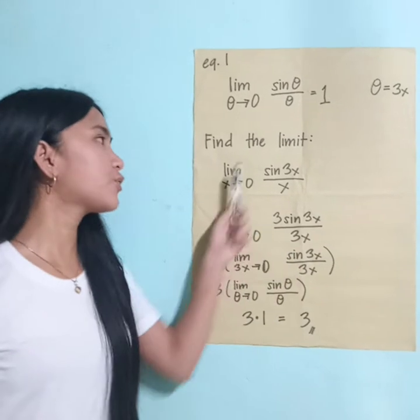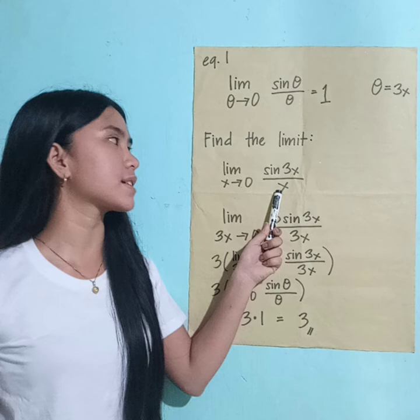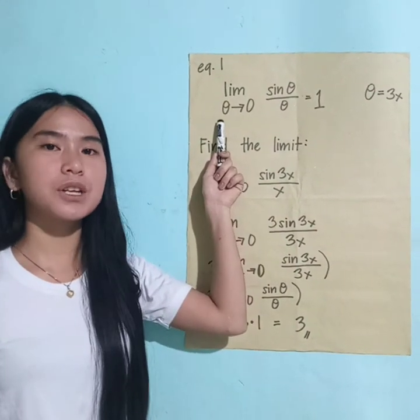We are going to find the limit as x approaches 0 of sine of 3x over x. I'm going to go ahead and call this one as equation 1.